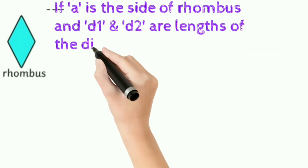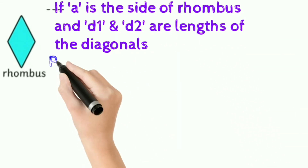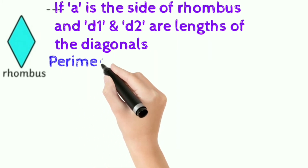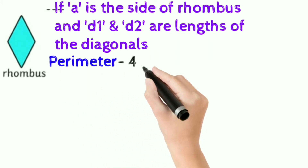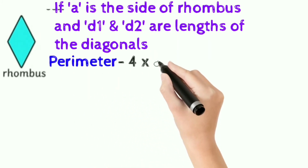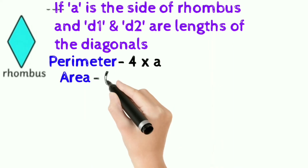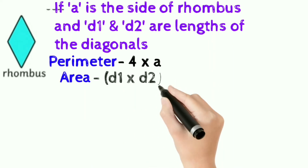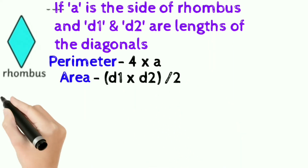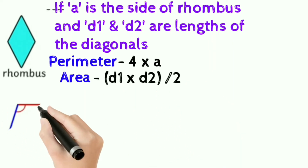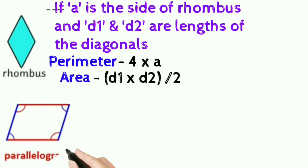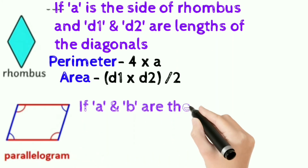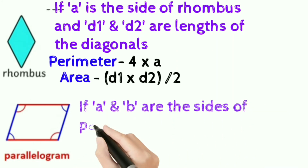Rhombus: if a is the side and d1 and d2 are the lengths of the diagonals, perimeter of the rhombus is 4 into a, that is 4a, and area of the rhombus is half d1 times d2, or d1 times d2 divided by 2.